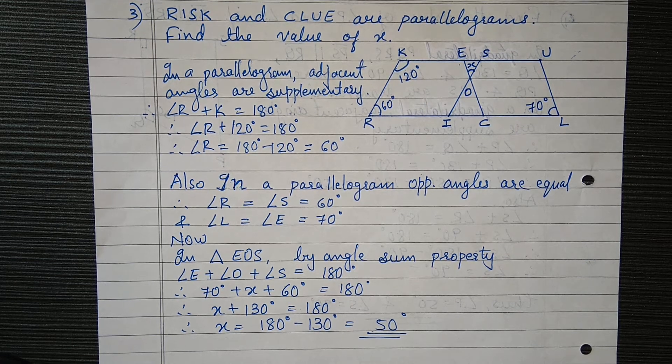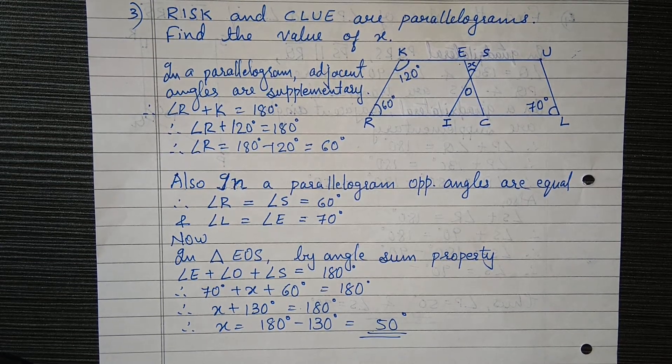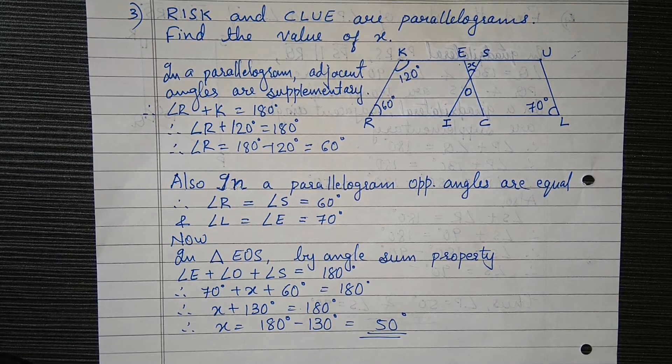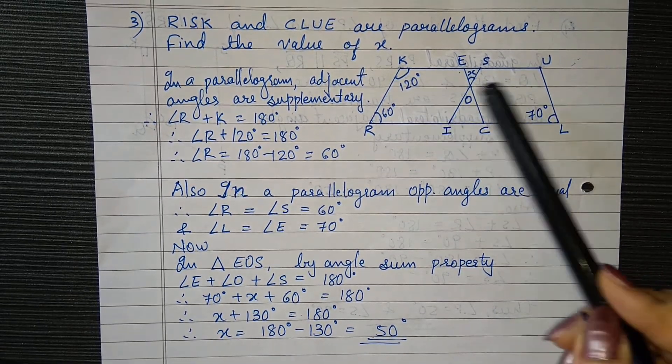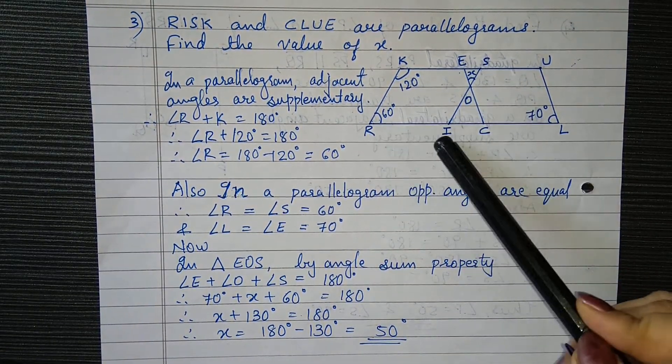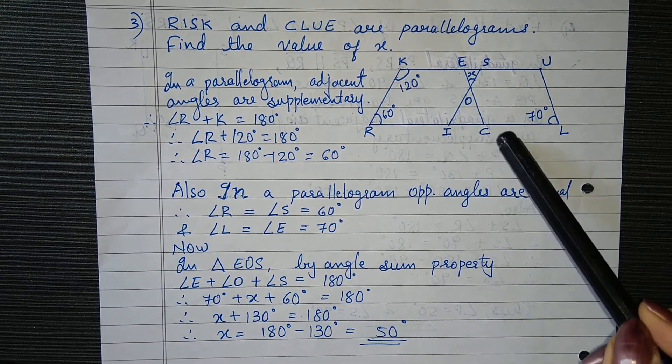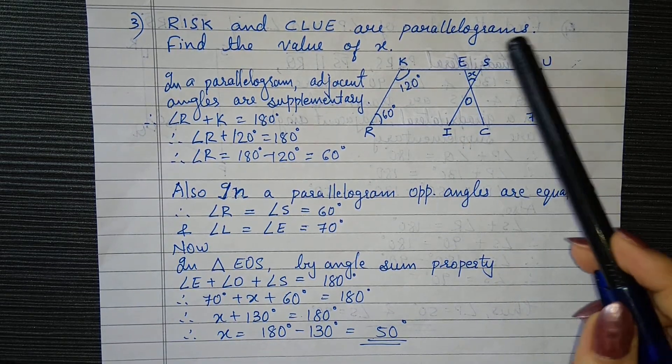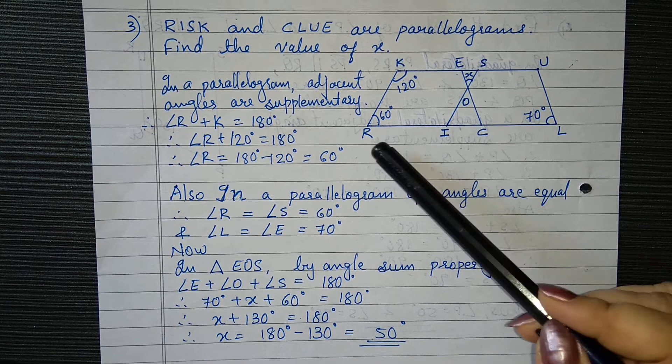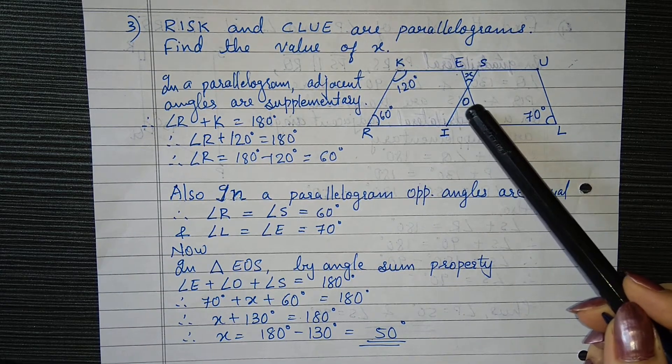Welcome back, grade 8 students. Let us continue with our exercise 3.3. Here we are given two parallelograms, one is RISK and another is CLUE, and their intersection point is O.